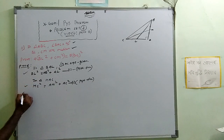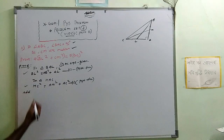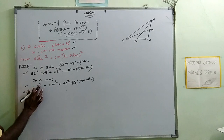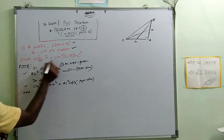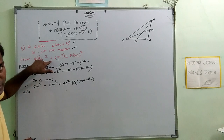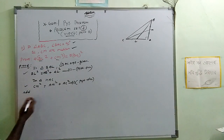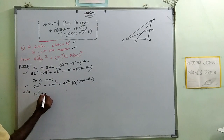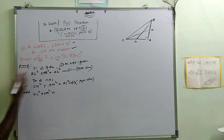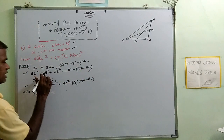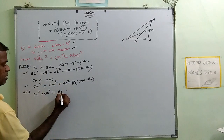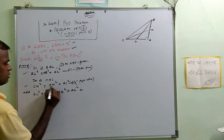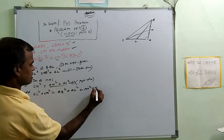Now let's add equations 1 and 2. We need both BL² and CM², so we add the two equations. On the left hand side we get BL² plus CM². On the right hand side we get AB² plus AL² plus AM² plus AC².